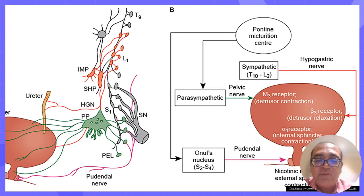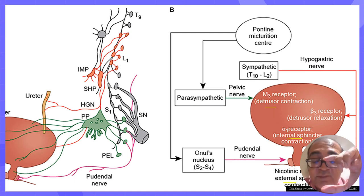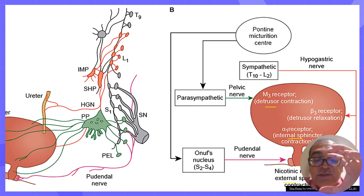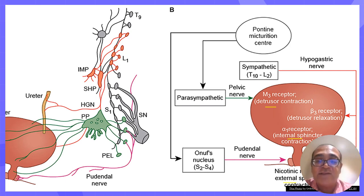When thinking about functional anatomy, there are three or four structures: the detrusor muscle, the internal sphincter, and the external bladder sphincter. The detrusor muscle is a smooth muscle of the bladder, and its smooth muscle cells are connected by gap junctions. These gap junctions help conduct electrical impulses throughout the detrusor muscle, so it contracts as a single unit — as a syncytium.